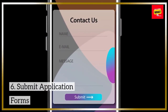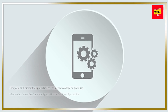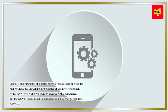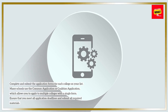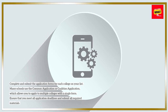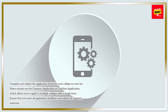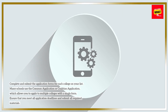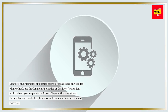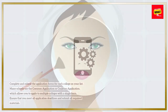6. Submit application forms. Complete and submit the application forms for each college on your list. Many schools use the Common Application or Coalition Application, which allows you to apply to multiple colleges with a single form. Ensure that you meet all application deadlines and submit all required materials.